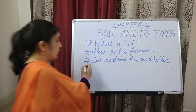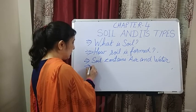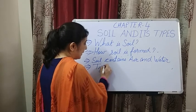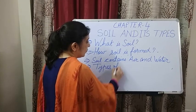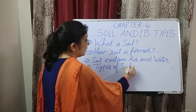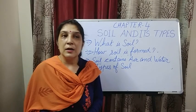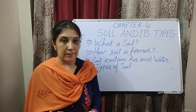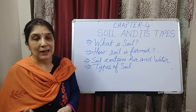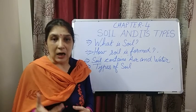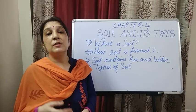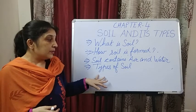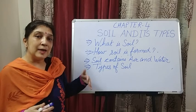The next thing we are going to discuss is that there are different types of soil. Children, the color of soil is not always the same — you will find black soil, brown, dark brown, light brown, and sometimes even red soil. Soil also has different types.